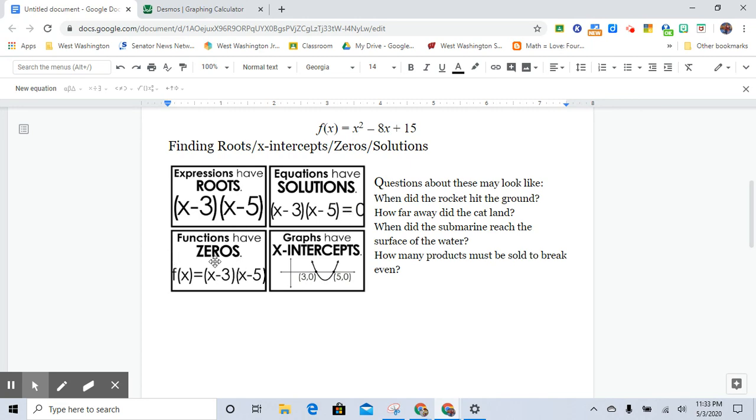Functions have zeros. So in f of x, when f of x is 0, then what are the values of x? And graphs have x-intercepts because it intersects the x-axis.